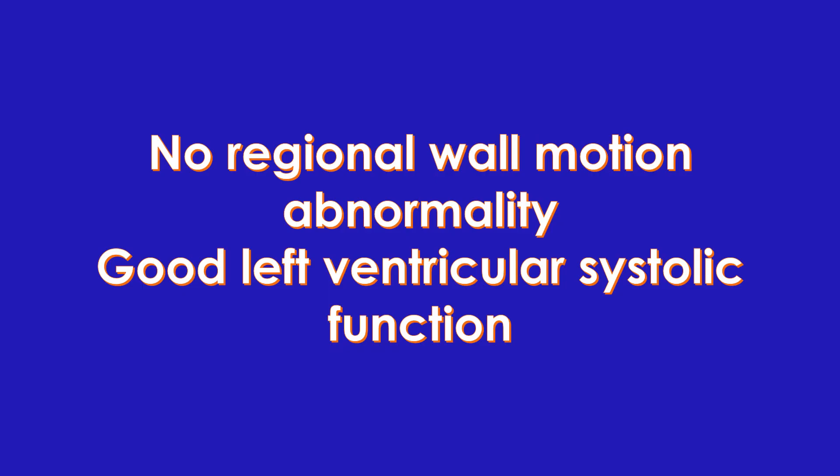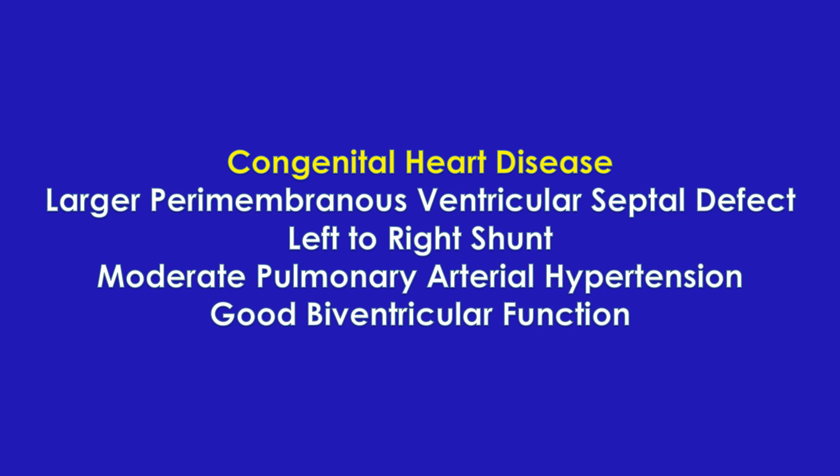After the descriptive report and measurements, the final conclusion is usually reported at the end. In case of a normal adult study, it may read as: no regional wall motion abnormality, good left ventricular systolic function. Regional wall motion abnormality may also be written in short as RWMA. If abnormalities have been detected, the conclusion will be larger. For example, in a person with a ventricular septal defect, it may read as: congenital heart disease, large perimembranous ventricular septal defect, left to right shunt, moderate pulmonary arterial hypertension, good biventricular function.